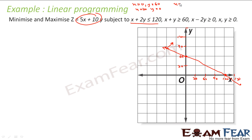Let's take the second constraint: x + y = 60. Put x = 0, you get y = 60. Put y = 0, you get x = 60. Both points (0, 60) and (60, 0) satisfy this equation. Let's join these points to plot x + y = 60 on the graph.